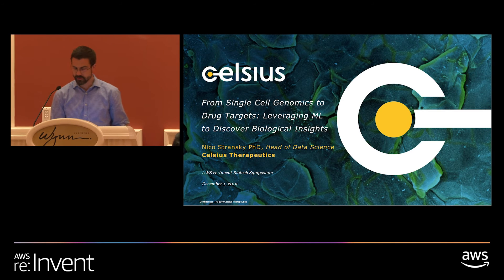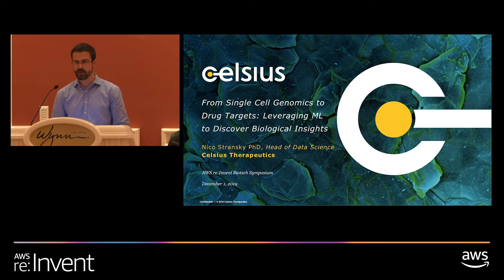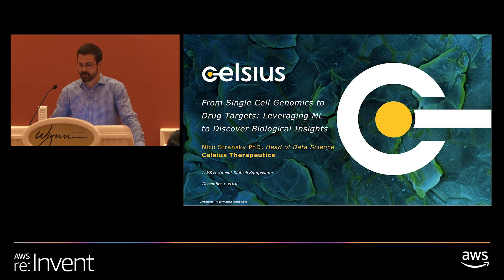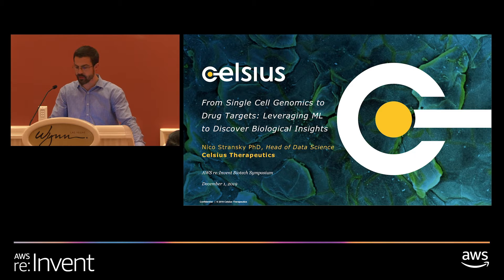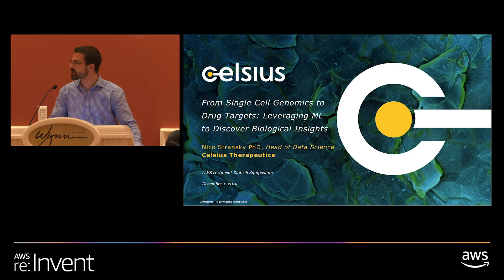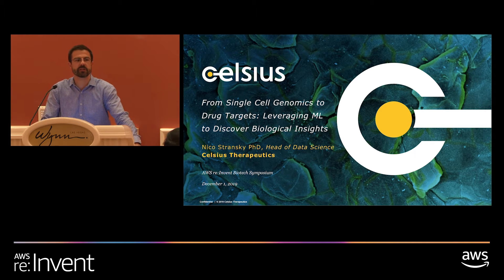A little bit of background about Celsius Therapeutics: we're a small company in Cambridge, Massachusetts. We launched a year and a half ago out of Third Rock Ventures and Google Ventures and other investors. We are about 40 employees at the moment and growing fast, and the goal of the company is to discover new drugs for cancer and other immune diseases.